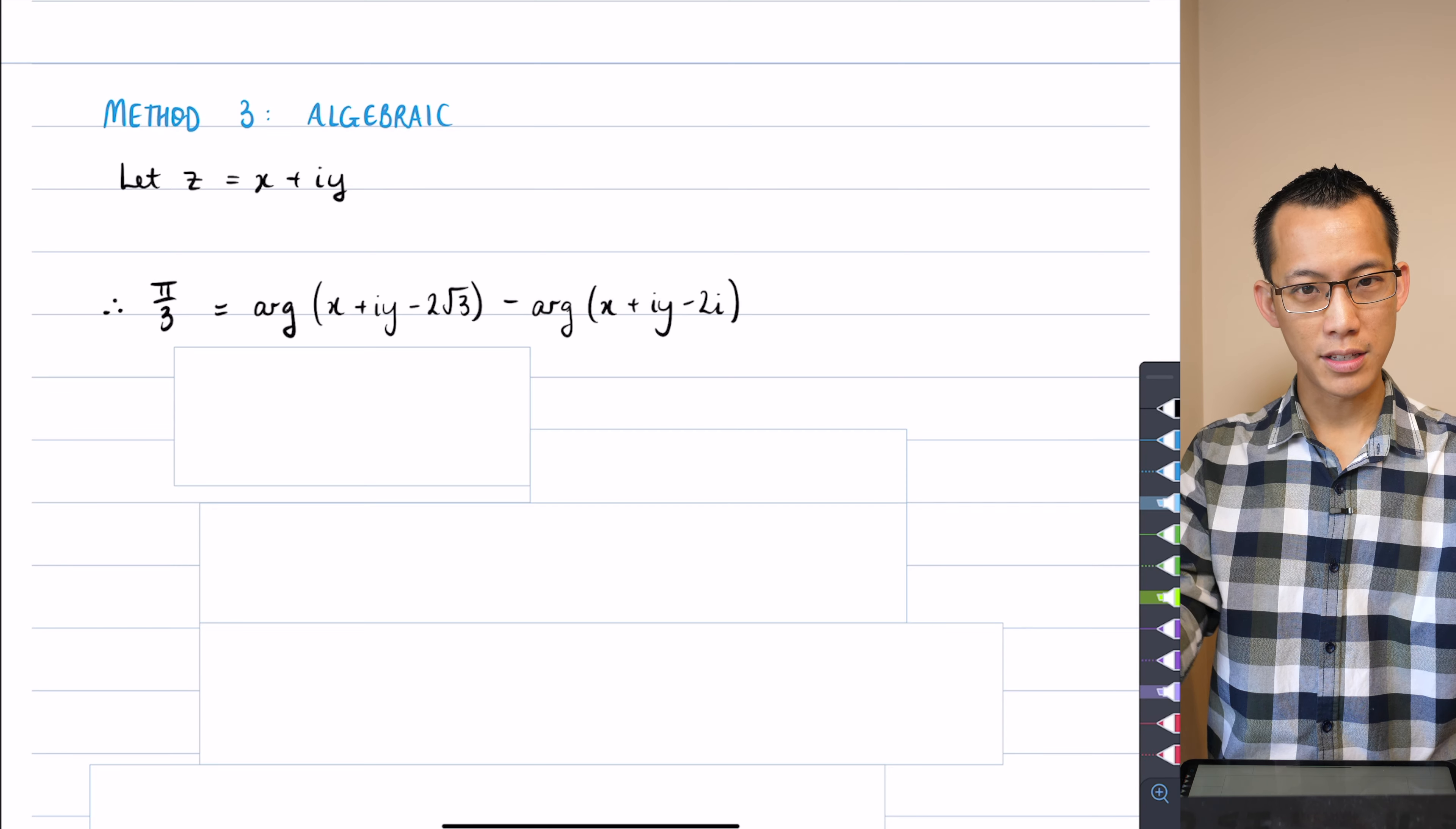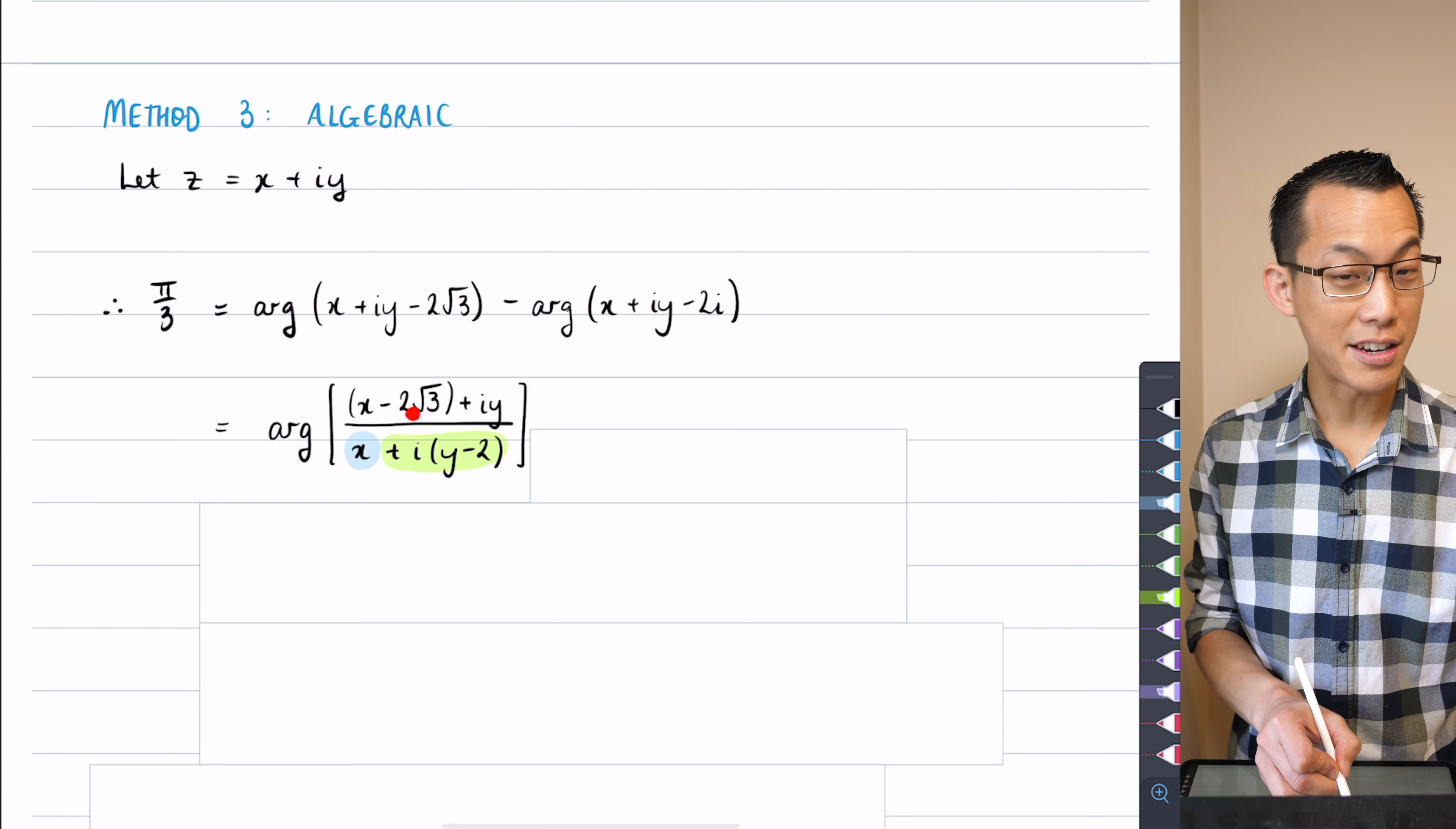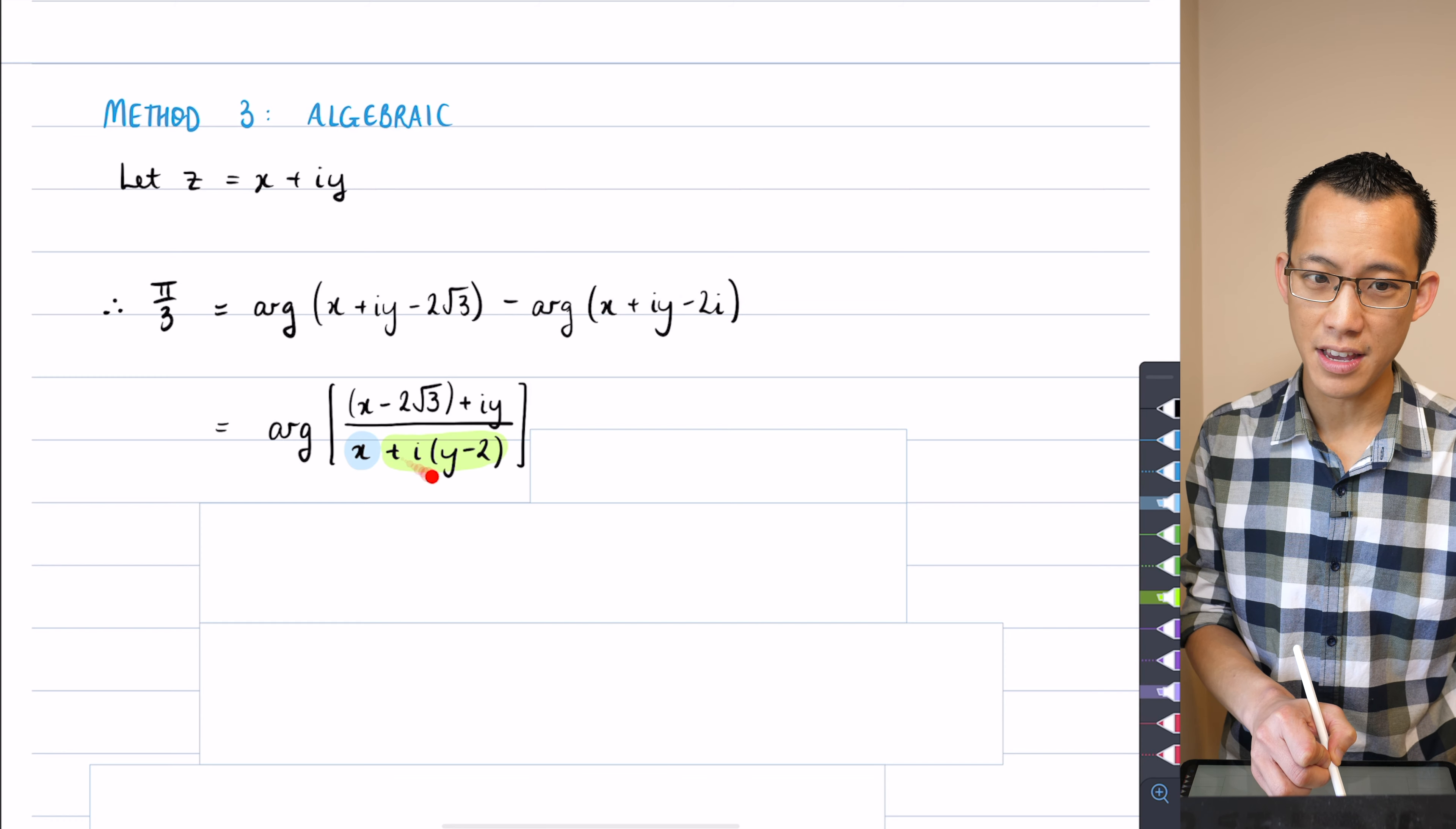This is one complex number and this is another one. So what I'm going to do is take these two arguments and combine them into one argument where I'm dividing this one here. You can see I've just collected the real terms over here in X minus 2 root 3. And then you've got the iY hanging over there on the right. And in this complex number, I've collected those imaginary terms and factorized out the i.